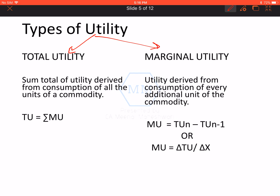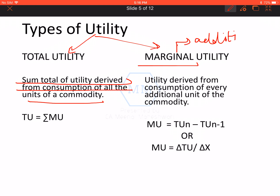Alfred Marshall gave two types of Utility concepts: the first is Total Utility and the second is Marginal Utility. Total Utility, as the name suggests, means total satisfaction — whatever I get from consuming all the units of a commodity. It refers to the sum total of utility derived from consumption of all the units of a commodity. The word 'Marginal' in Economics means Additional. Marginal Utility means the utility we get from every additional unit of a commodity — as I consume each unit, the satisfaction I get from each additional unit, when expressed in number form, is called Marginal Utility. It refers to utility derived from consumption of every additional unit of a commodity.